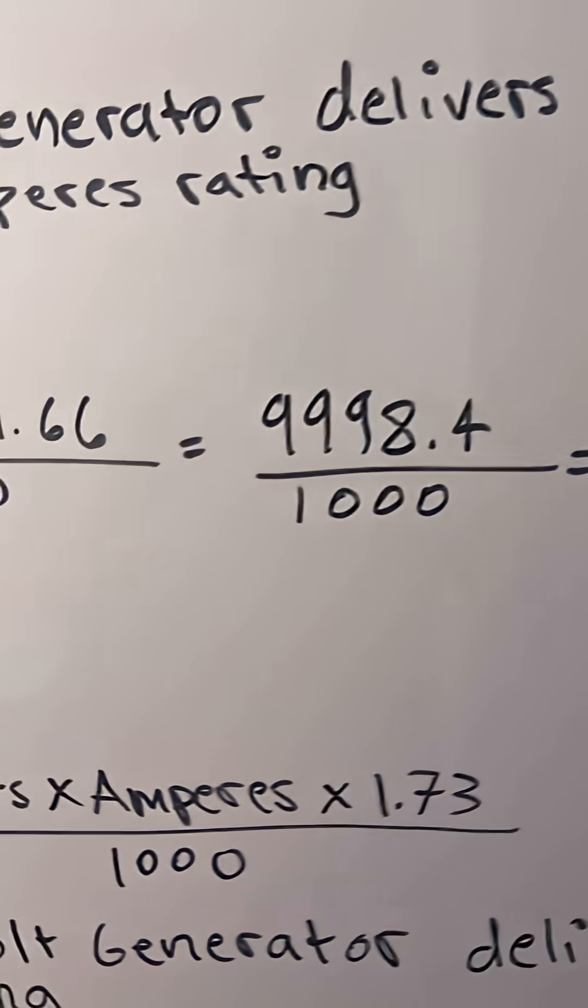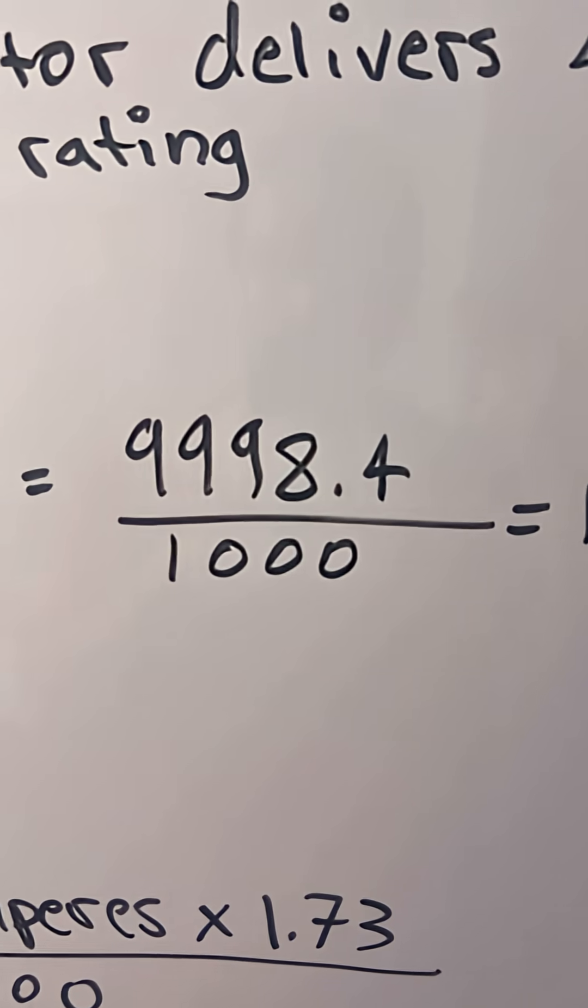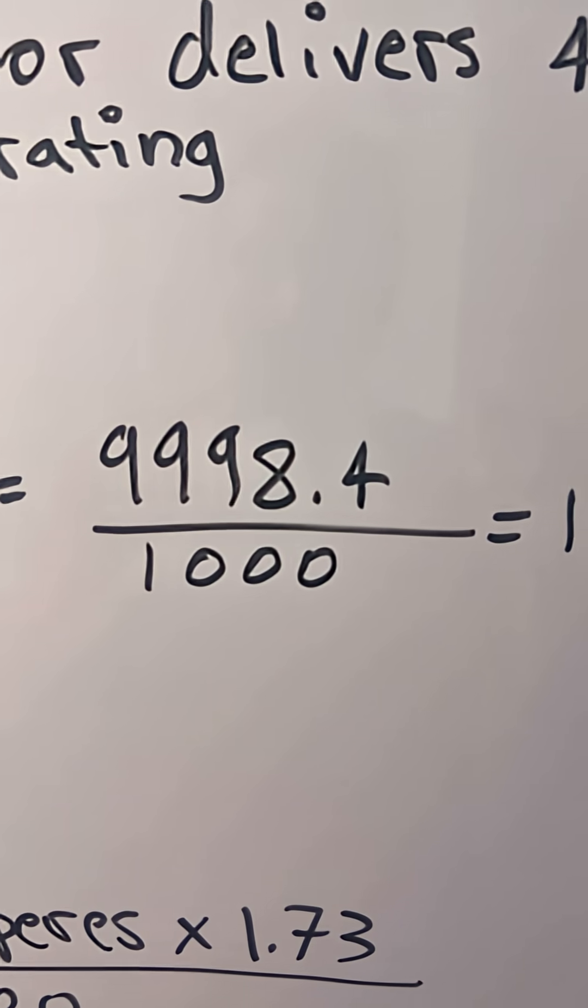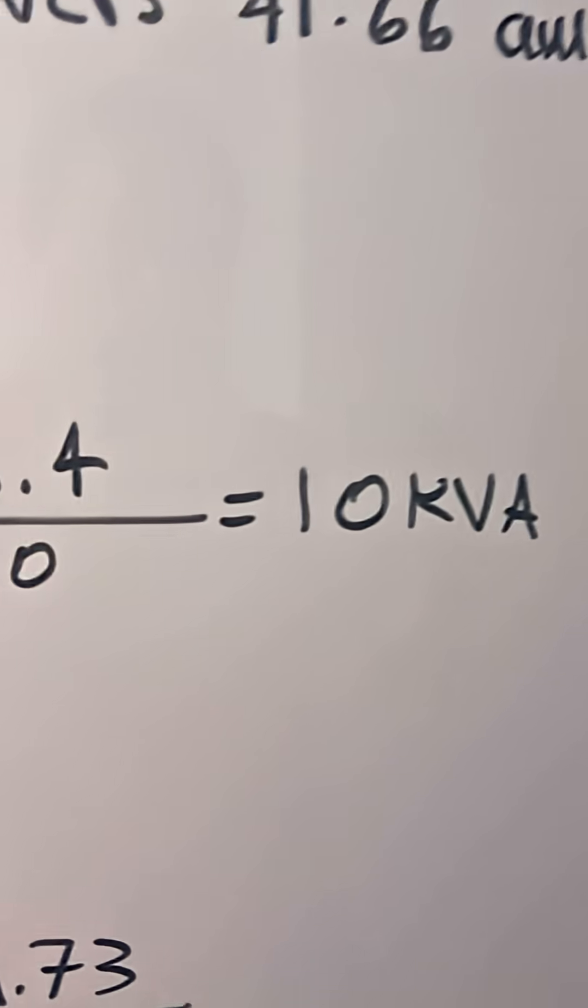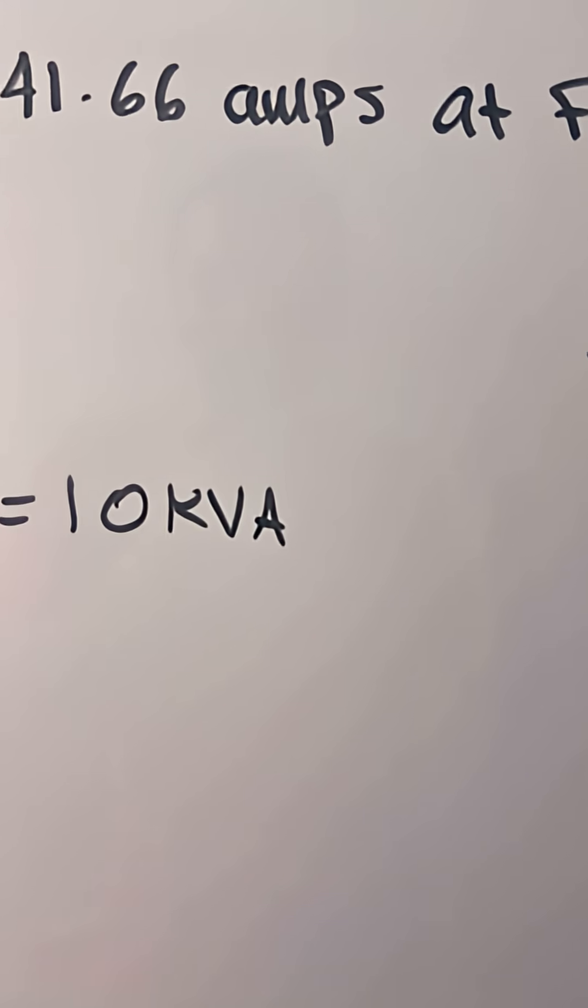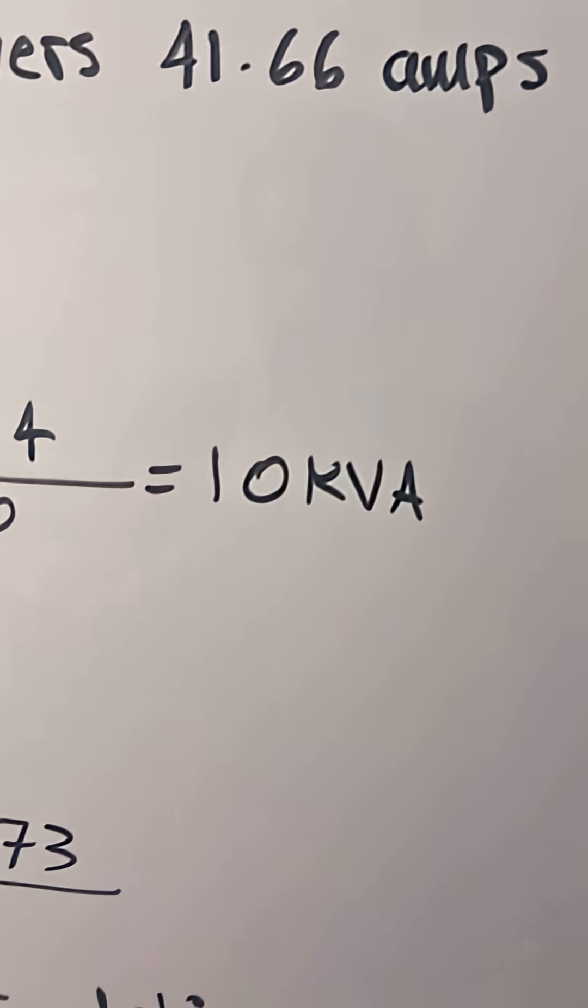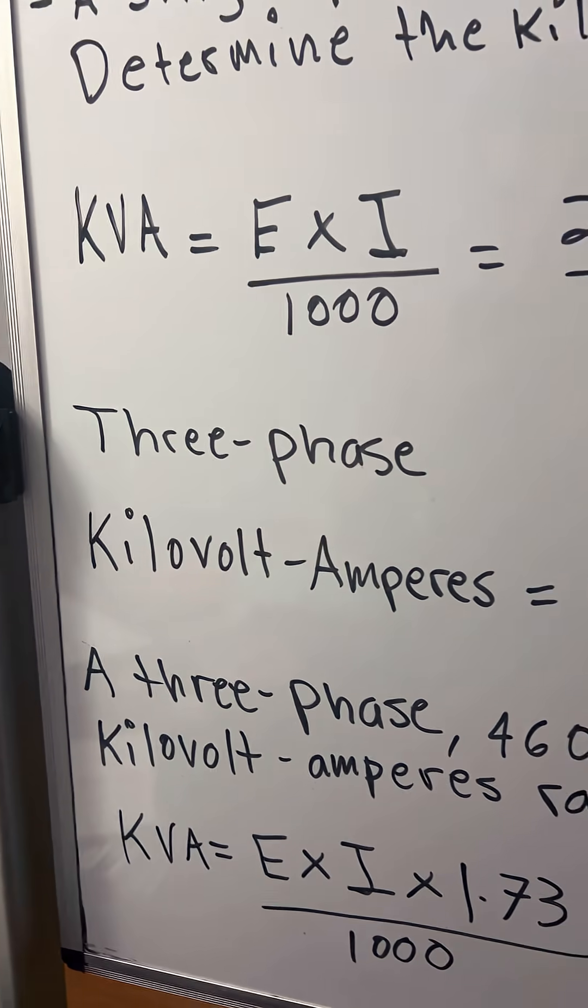1000, that equals 9,998.4 divided by 1000, and that will give you 10,000 KVA. Now for three-phase, the